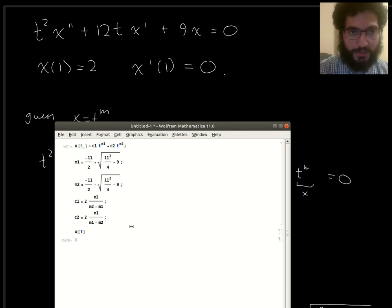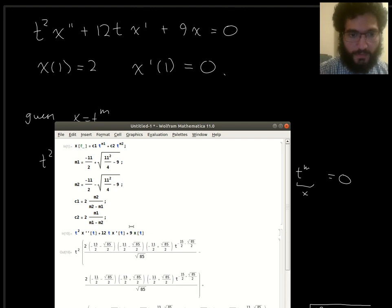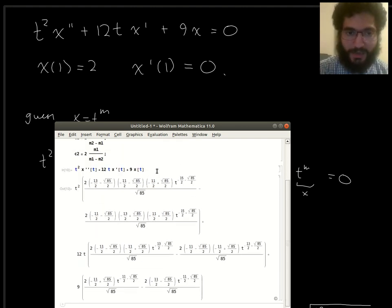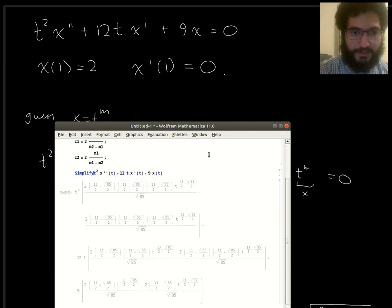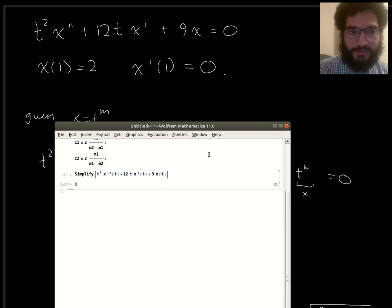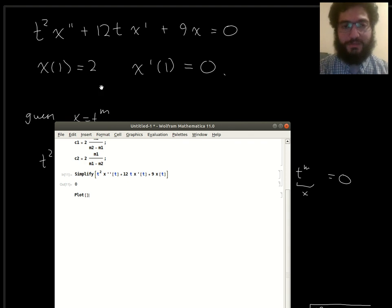And finally, let's check the differential equation. So, t squared times x prime prime of t plus 12t x prime of t plus 9 x of t. And it's all this stuff. Now imagine doing this by hand, trying to check that it solves the differential equation. Now I can simplify that. Please be 0. Yes. OK, now I can plot it confidently knowing that it really solves the original differential equation.